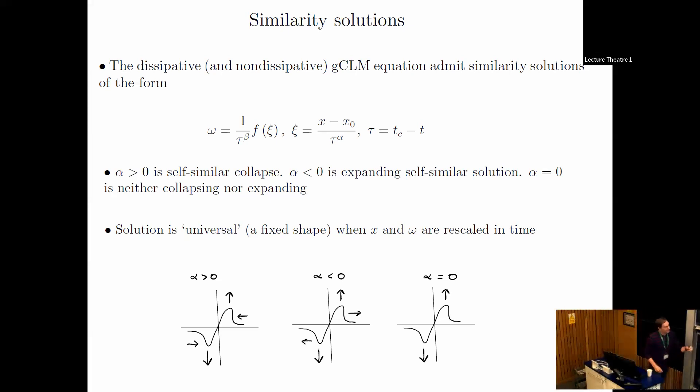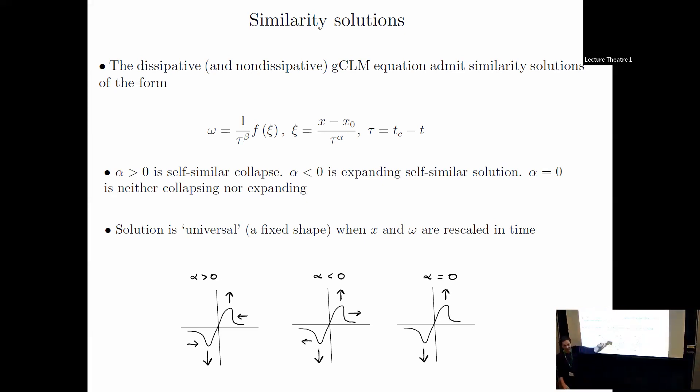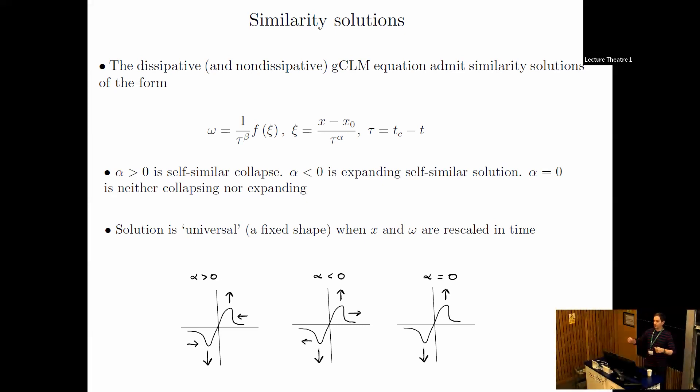Those are common, but we also find solutions where alpha is less than zero. That means the self-similar solution expands to infinity in finite time—the support expands. Why would it blow up? [Audience response] You get negative diffusion, exactly.